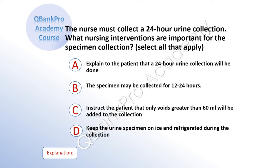The nurse must collect a 24-hour urine collection. What nursing interventions are important for the specimen collection? A: explain to the patient that a 24-hour urine collection will be done. B: the specimen may be collected for 12 to 24 hours. C: instruct the patient that only voids greater than 60 mL will be added to the collection. D: keep the urine specimen on ice and refrigerate it during the collection.